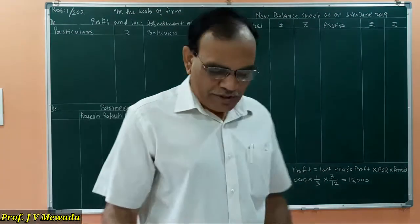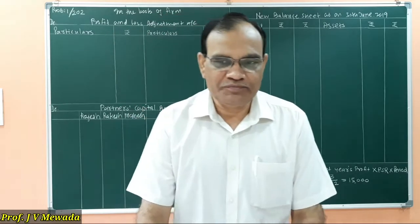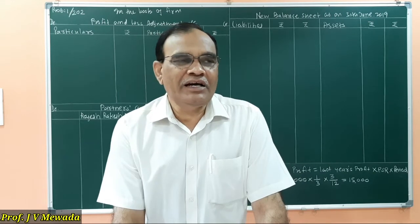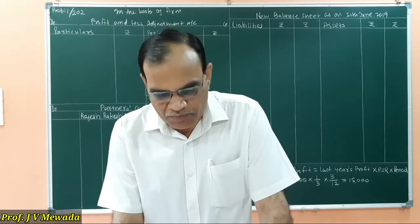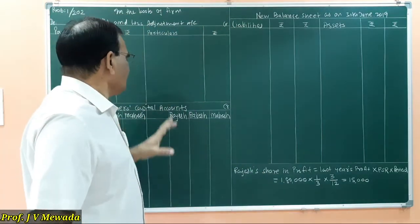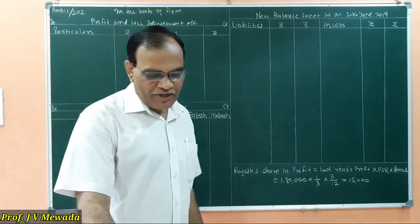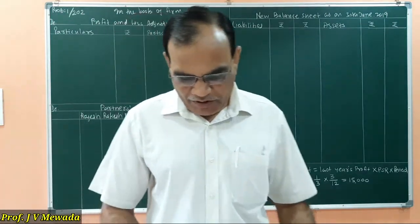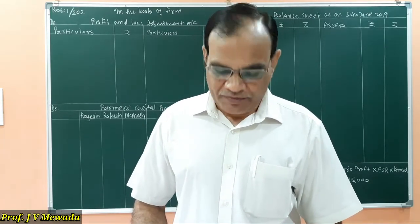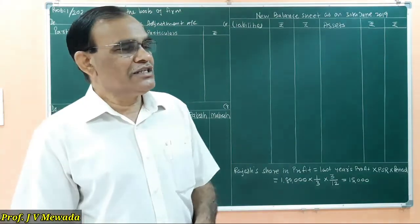I have already prepared the working note, so I am going to explain. As usual, just like a retirement, whenever we are asked to prepare ledger accounts, we prepare the Profit and Loss Adjustment Account, Partners' Capital Accounts, and the new balance sheet of the continuing firm. So step number one is already prepared, and step number two is to transfer the items of the balance sheet — liability side as well as asset side.